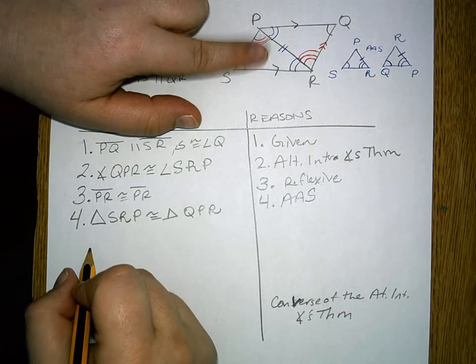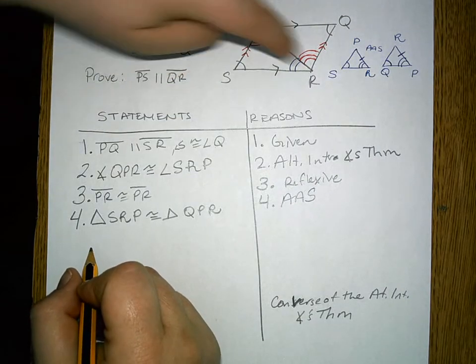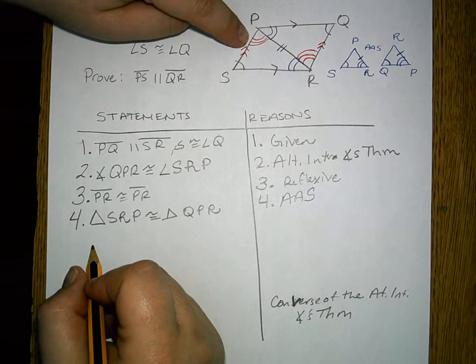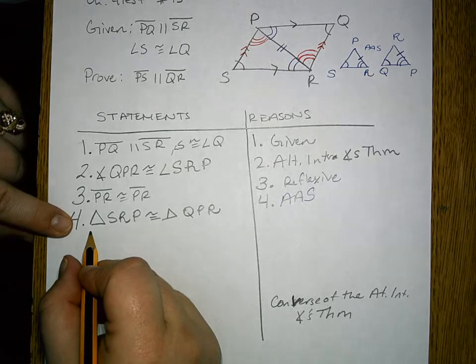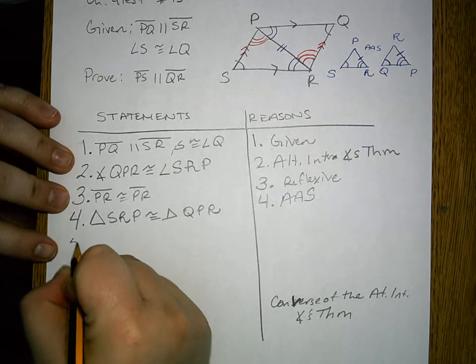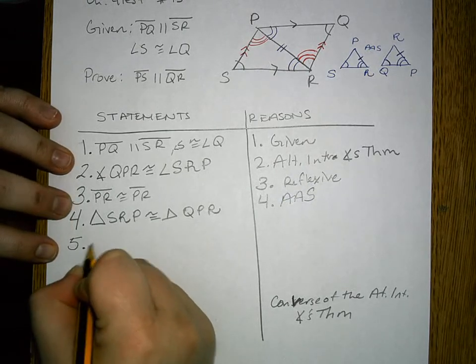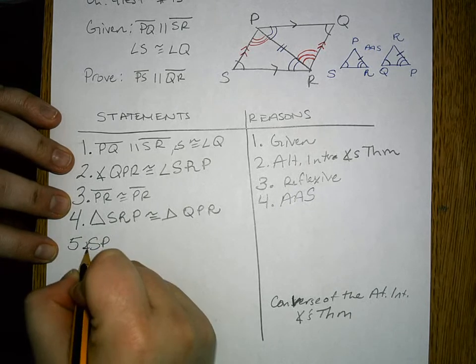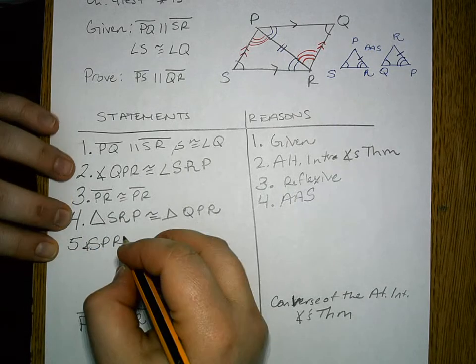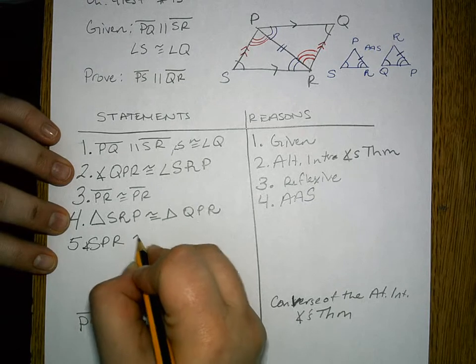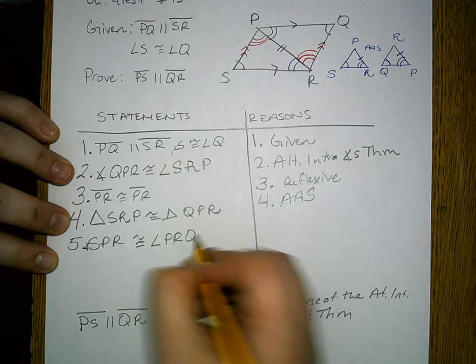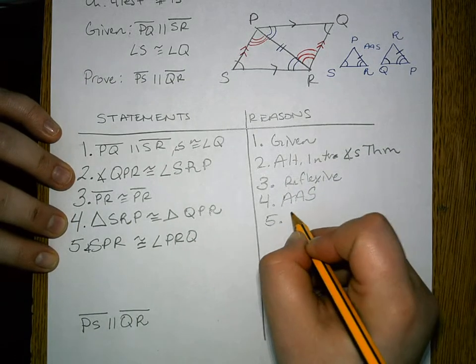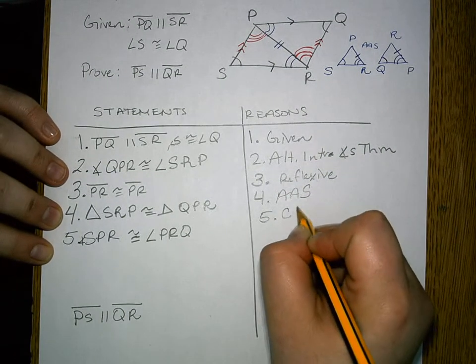Now, we need to look back at the red part that I drew in because that is what is true based on the congruent triangles. So we have that angle SPR is congruent to angle PRQ because corresponding parts of congruent triangles are congruent.